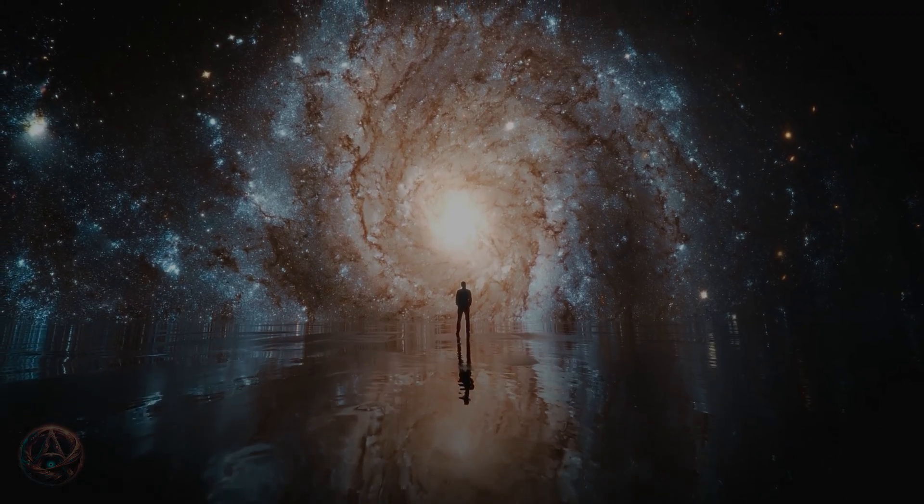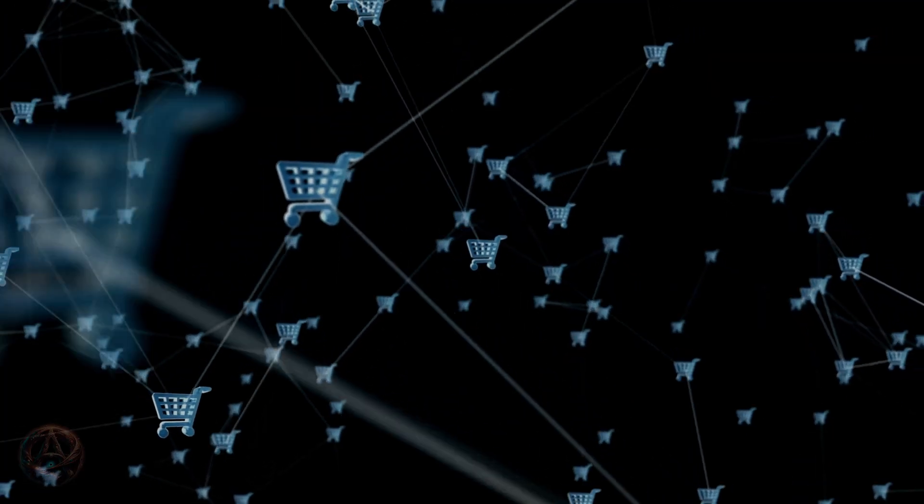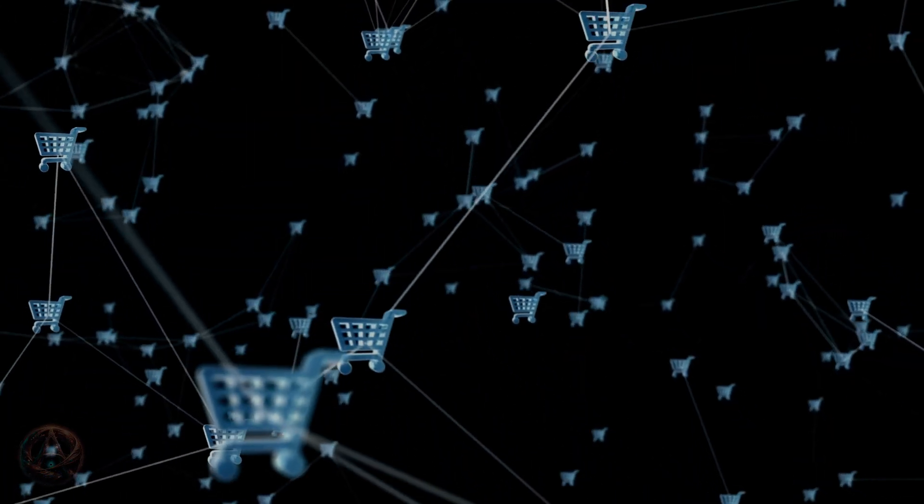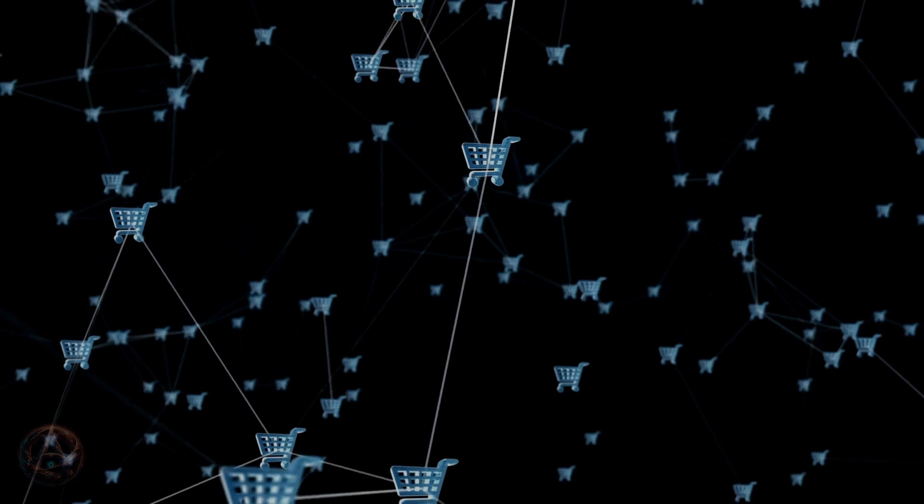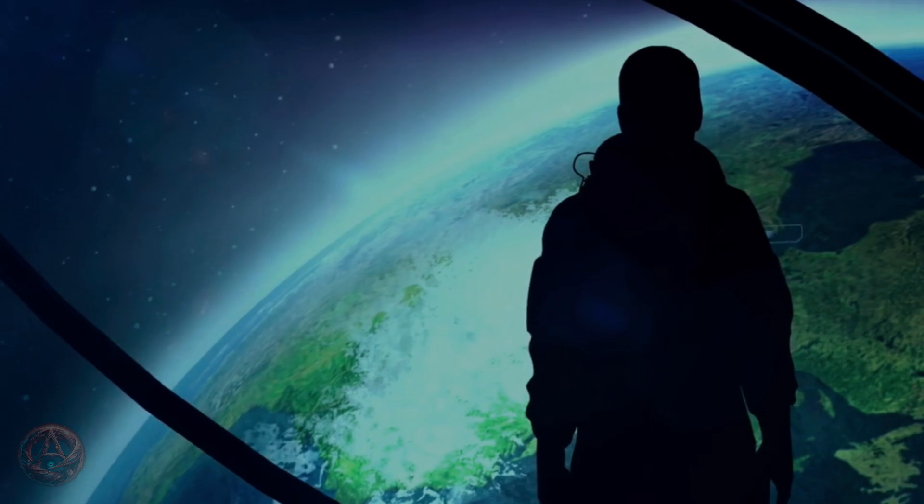We might be quantum computers designed to process information from multiple realities simultaneously. This leads us to a startling conclusion about the nature of human consciousness. Rather than being isolated individuals, we might be more like quantum nodes in a vast network of consciousness spanning multiple realities. Our memories, our decisions, our very sense of self, might be constantly shaped by information flowing between parallel universes.